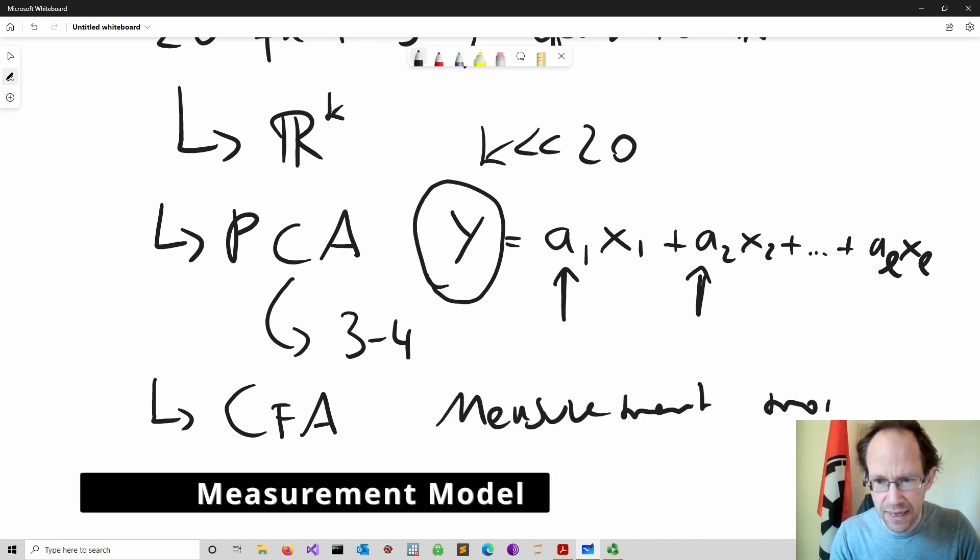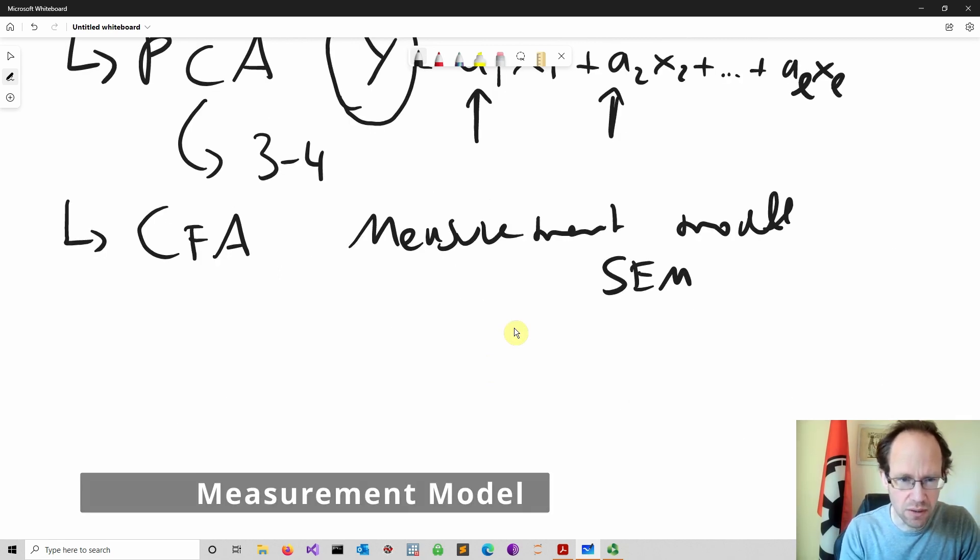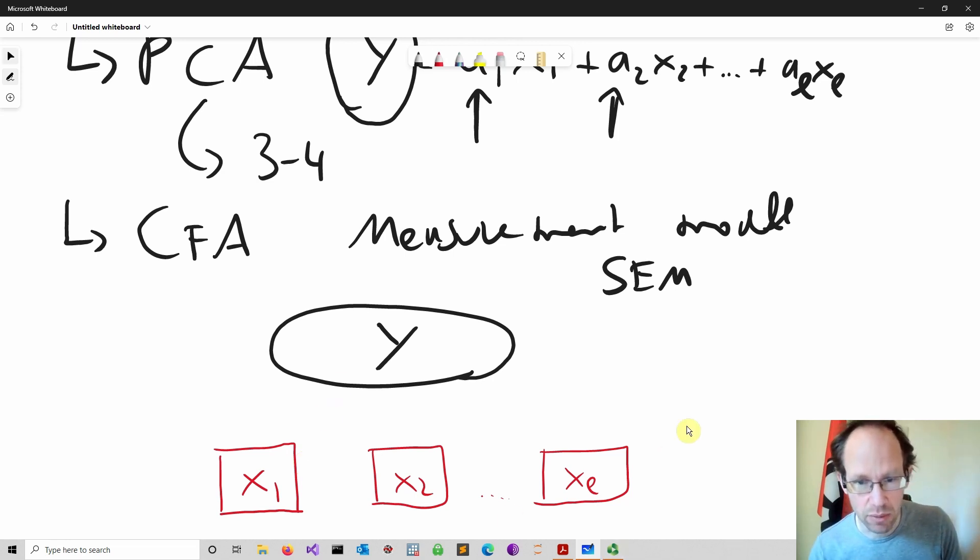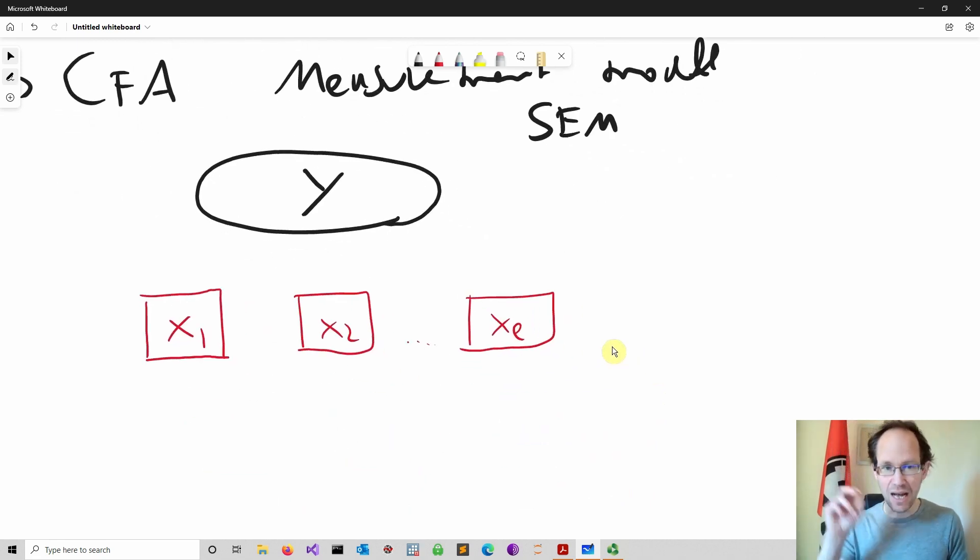A measurement model is related to this whole area of structural equation modeling. I have here my social construct again, I denoted Y, and I don't know actually how to measure it, so I put this into an oval shape. Then we have these factors in rectangular boxes which means I can actually measure them. Now the idea of the measurement model is that my latent variable can influence these different answers to a question or the different factors I can measure. So the direction of influence goes from your latent variable to these factors.